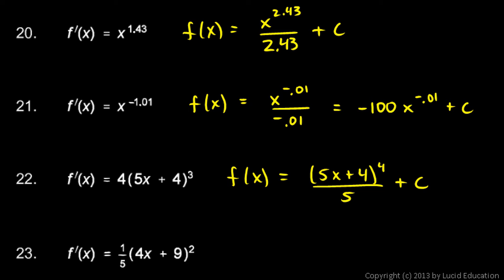And one more, 1 fifth 4x plus 9 squared. Okay, what function here, f, will have this for its derivative? Well, it's probably going to be 4x plus 9 cubed, or some variation on this. So if we take the derivative of this, we're going to have 3 times 4x plus 9 squared times 4. So the derivative of this would be 12 times 4x plus 9 squared. And instead of 12 times 4x plus 9 squared, we need to have a 1 fifth. So we need to divide by 12 to get rid of that, and also divide by 5 to get this 1 fifth down there. So that's a factor of 60 in the denominator.